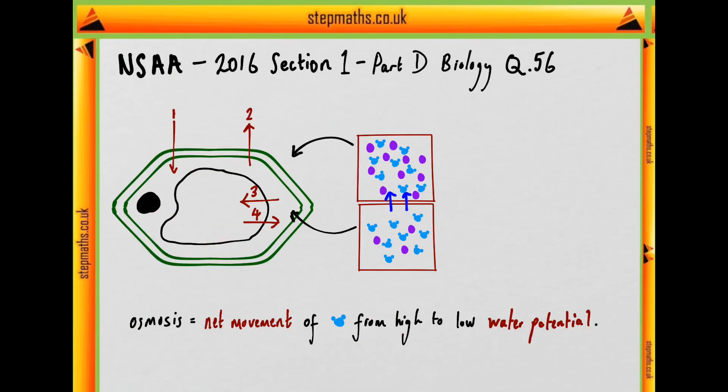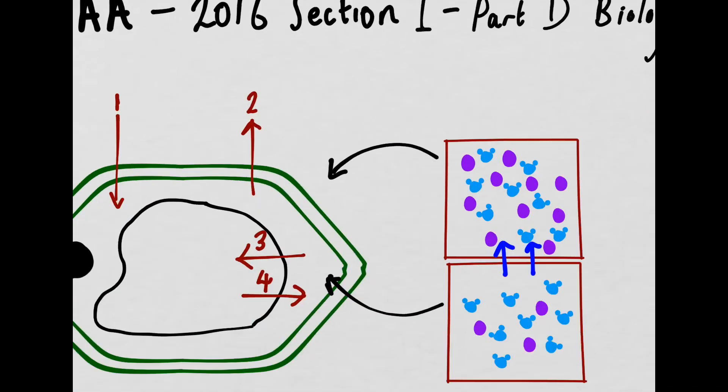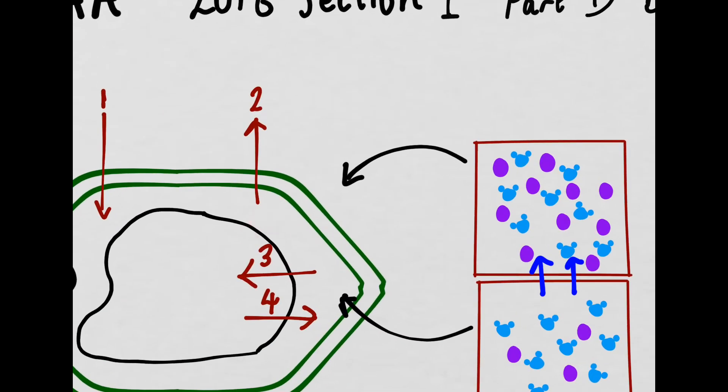So we'll have net movement from a region of high to low water potential. These water molecules can move more freely and so we can know that two is automatically correct since it's indicating movement from the cytoplasm to the surrounding solution.